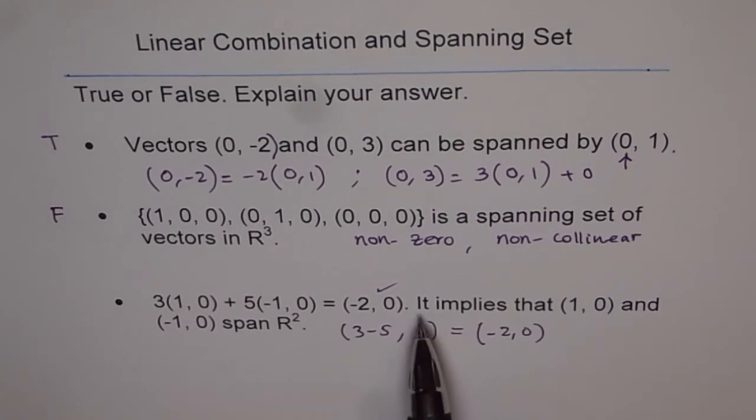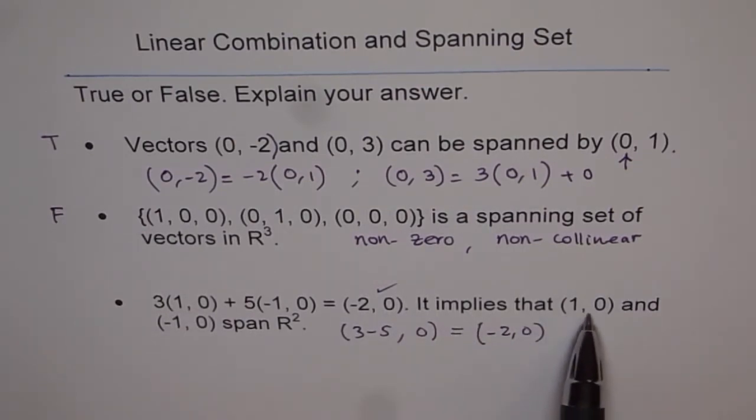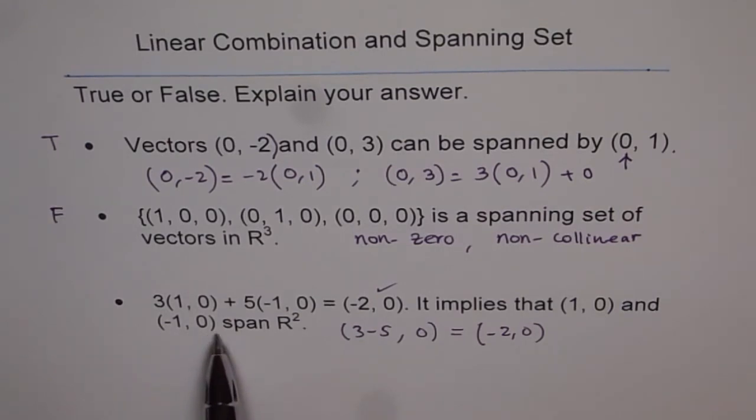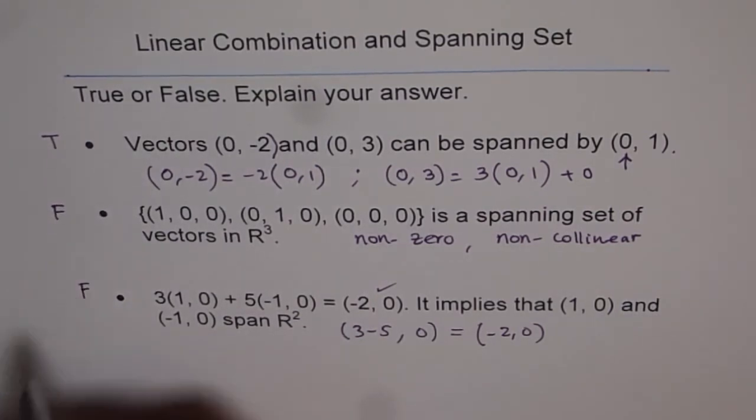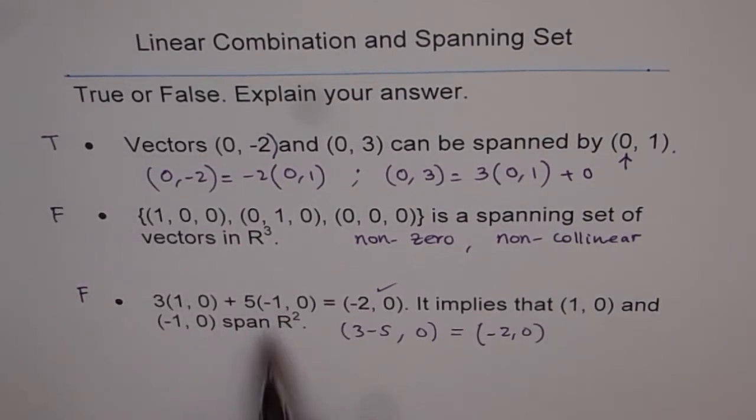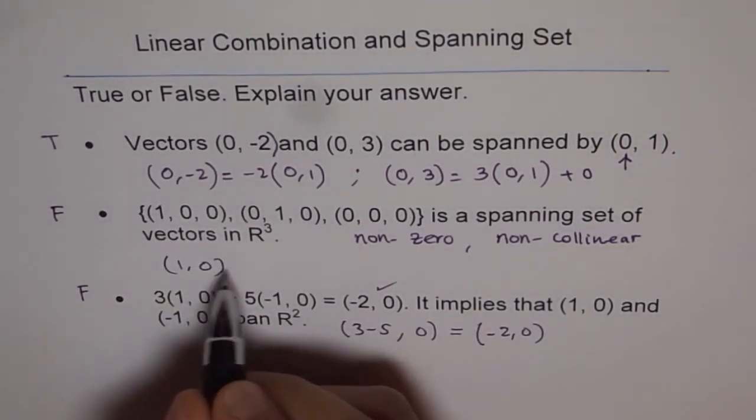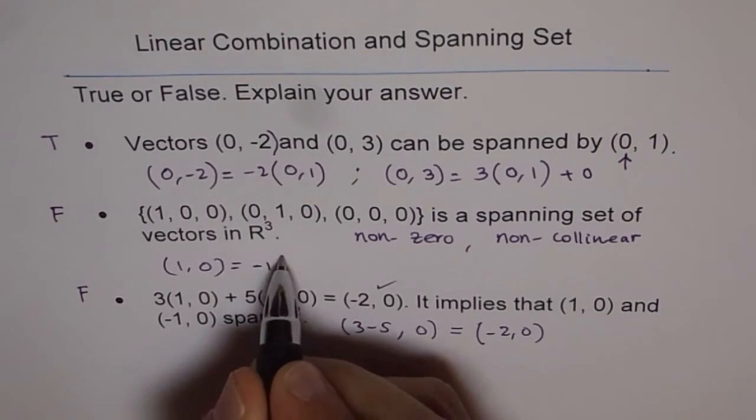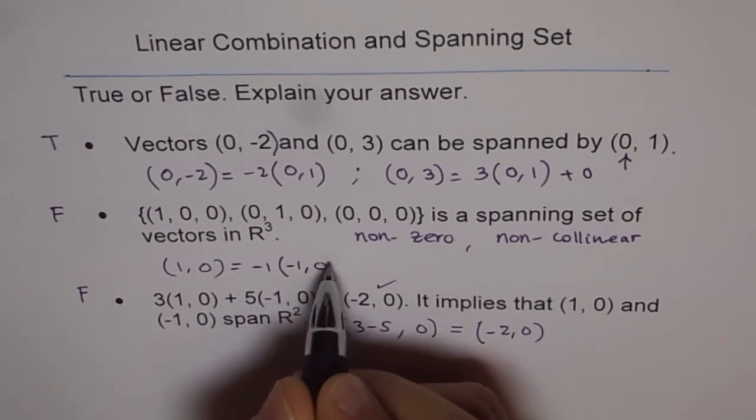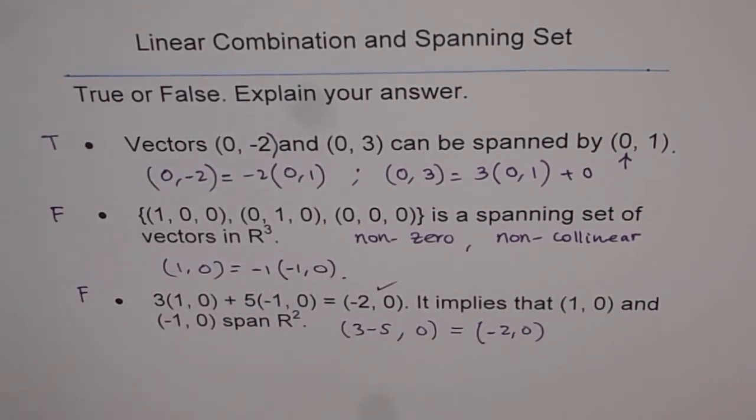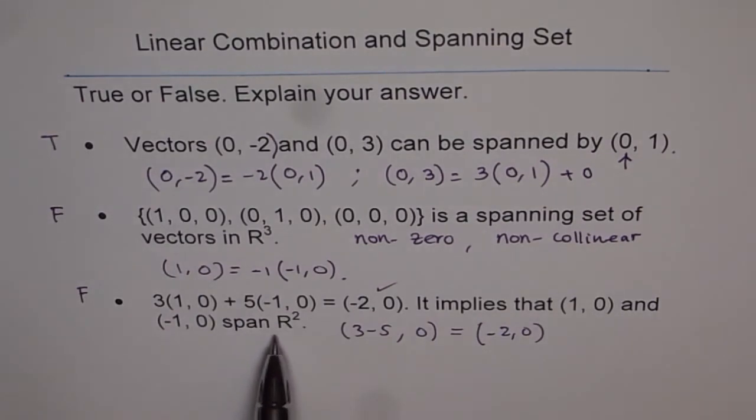Now, the question is, it implies, does it imply that (1,0) and (-1,0) span R²? The answer should be false. Why? These are collinear vectors. I can always write (1,0), let me do it here, (1,0) as equals to -1 times (-1,0). Since they are collinear, they cannot span all the vectors in R².